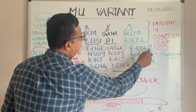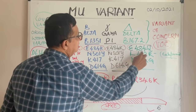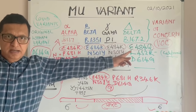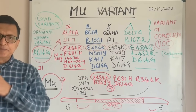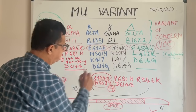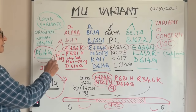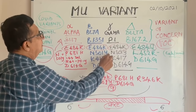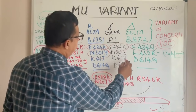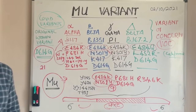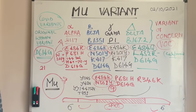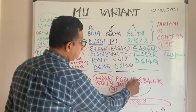Among those, E484K is present — and even though mu has E484Q, it is essentially the same mutation. So all the variants of concern had 484K, and mu also has it. Mu also has the N501Y deletion: the UK Alpha variant had it, the Beta variant had it, the South African Gamma variant had it, the Brazil variant had it — and mu also has it.